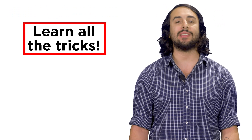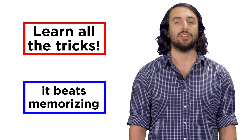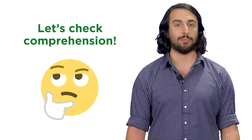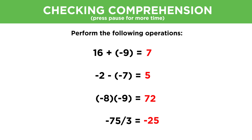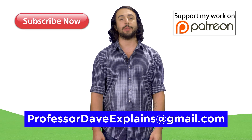Little tricks like this make it easier to remember all kinds of arithmetic identities and help us go beyond simple memorization, which by itself doesn't always lead to a deep appreciation of mathematics. Now that we know how to perform operations with negative numbers, let's check comprehension. And as always, feel free to email me at professordaveexplains@gmail.com.